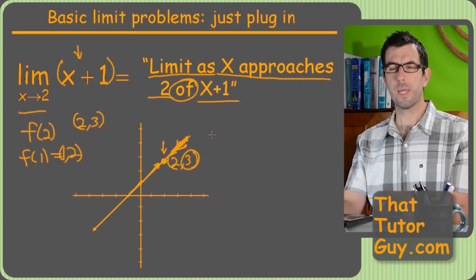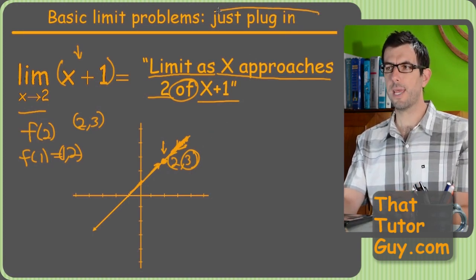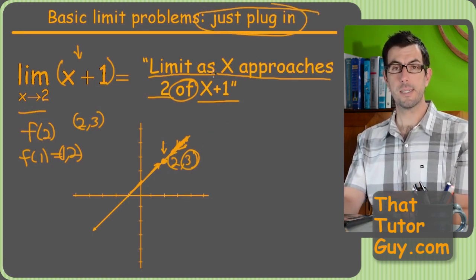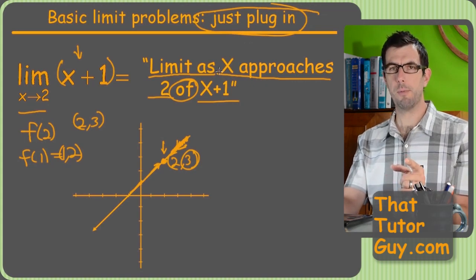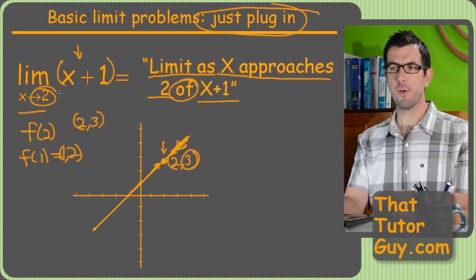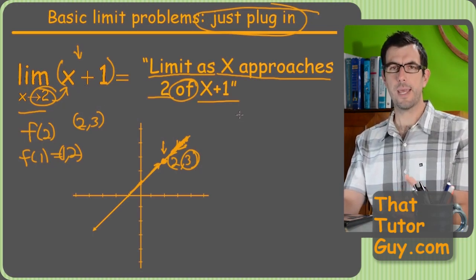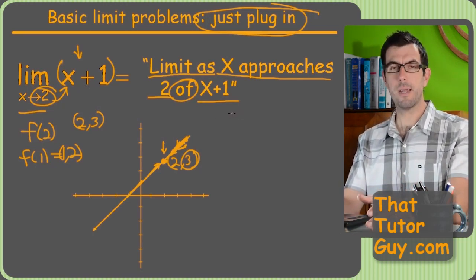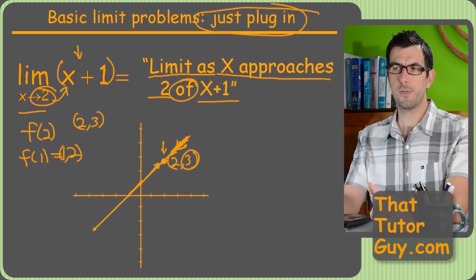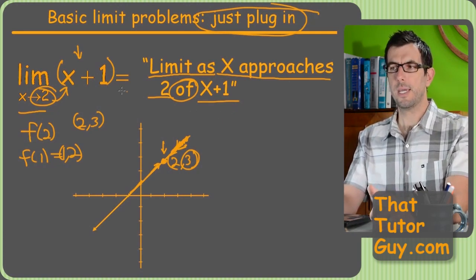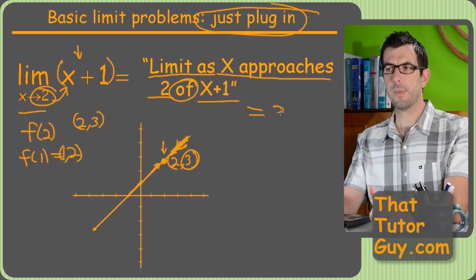And for a basic problem like this, we can actually just plug in. So that's why I wrote, hey, we can just plug in at the top, because that's the first thing you should always try in limit problems. Just take whatever number they gave you here and plug it in for x, and that'll probably be the right answer if you don't get something weird. But if you just get a number, it's right. So if we took 2 and plug it in here, we get 2 plus 1 is 3. And sure enough, the answer to this problem is 3.